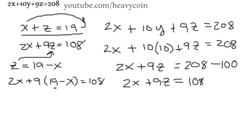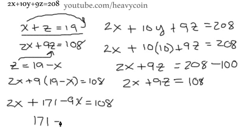Alright, now we want to go ahead and simplify this down. So we have 2x plus 9 times 19 is 171 minus 9x is equal to 108. So we have a 2x minus a 9x, and I'm going to rewrite this 171 minus, so this is going to be a 7x equal to 108.